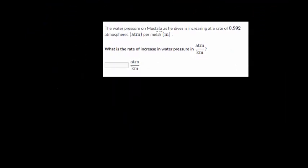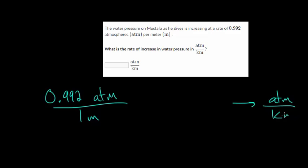The water pressure on Mustafa as he dives is increasing at a rate of 0.992 atmospheres per meter. Let me write that down. 0.992 atmospheres, which is ATM, divided by every meter. Every meter, the pressure increases at 0.992 atmospheres. We want to know, what is the rate of increase in water pressure in atmospheres per kilometer? Right now we have atmospheres per meter. We want to change it to atmospheres per kilometer. To do that, we need to convert between meters and kilometers. Remember, kilo just means 1,000. For every 1 kilometer, there are 1,000 meters.